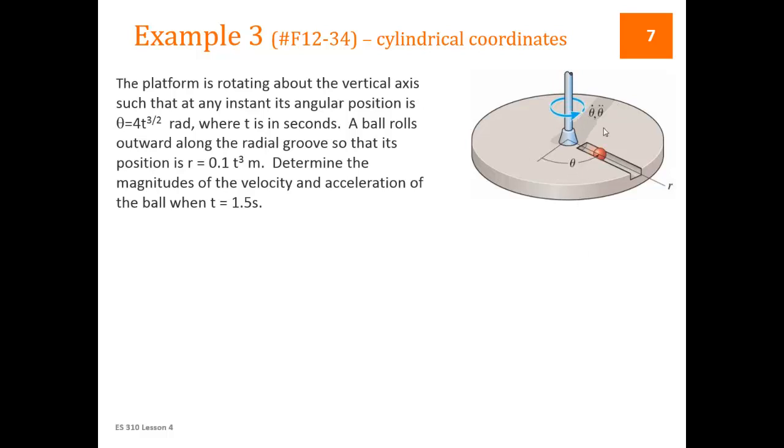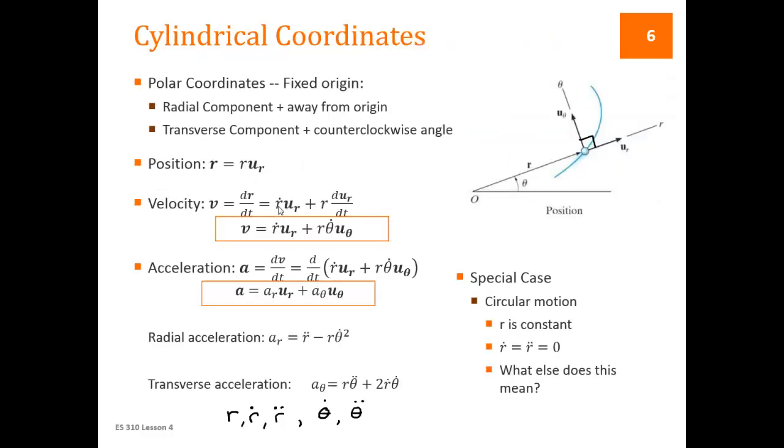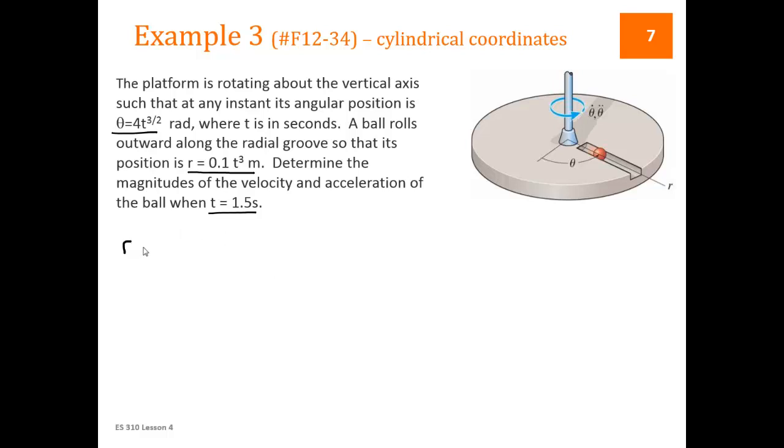Let's take a look at an example of this. We have a disk that's spinning, and we have a ball that moves outwards along the disk as it's spinning. So we're given an expression for θ, which tells us how it's spinning, and we're given an expression for r, which tells us how fast it's moving outwards. We're supposed to determine the magnitudes of the velocity and the acceleration of the ball when t happens to be 1.5 seconds. As we said on the previous slide, these five variables, if we can find values for these five, we're set.